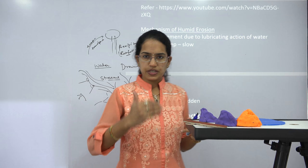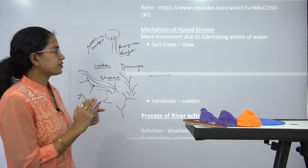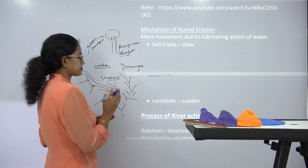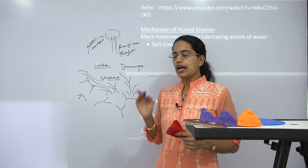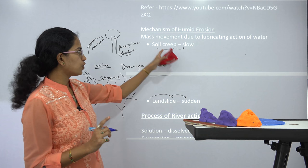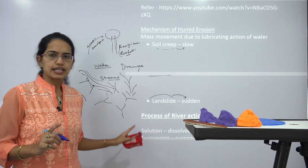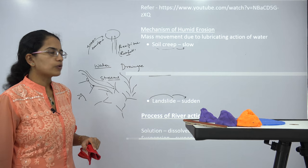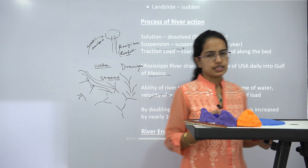Here we will mainly focus on the features and why erosion takes place, discussing the mechanism under humid conditions. In the last class we talked about soil creep and landslides — soil creep is a slow process while a landslide is sudden — so the landforms formed in each case are very different. When talking about how the river process takes place, there are three major terms we must understand.